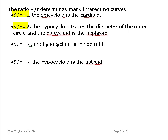Here, big R over little r equal to two. That means the stationary circle has a radius that's twice the radius of the moving circle. The hypocycloid traces out the diameter of the outer circle. That is, it would be tracing a straight line right across the outer circle. The epicycloid traces out the nephroid.